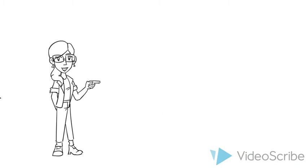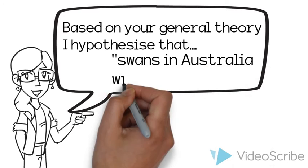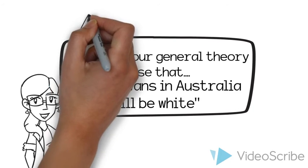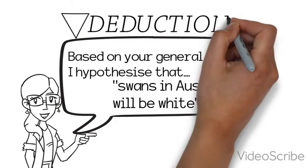Based on that general theory about the color of swans, we can test the theory by hypothesizing that swans in Australia will be white. That's deduction. Going from general theory to a specific conclusion or prediction.